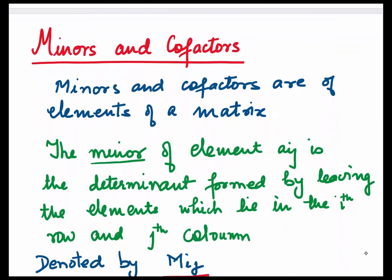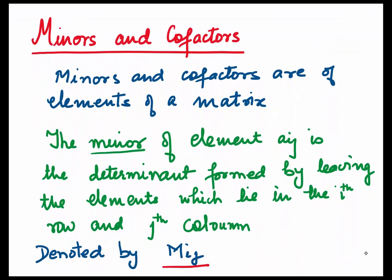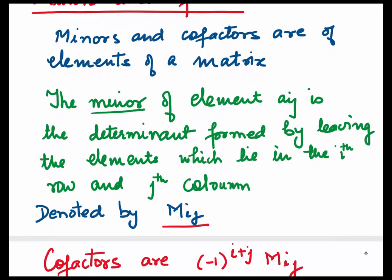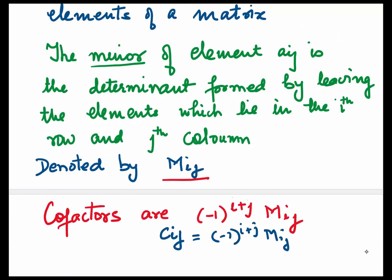First, let's define a few things. The first thing we define is minors and cofactors. The minor of an element aij is the determinant formed by leaving the elements which lie in the i-th row and j-th column. They are denoted by mij. If we multiply our minor mij with minus 1 to the power i plus j, they become cofactors. Cofactors are denoted by cij.